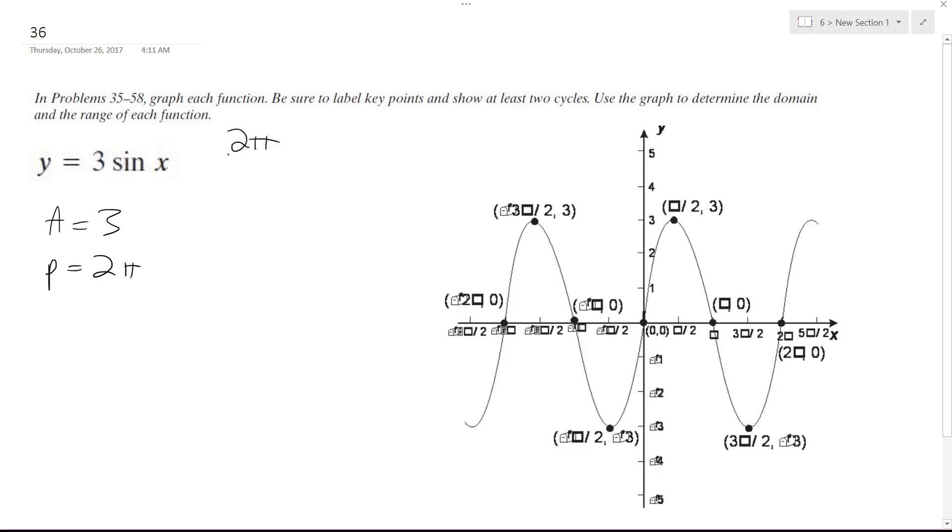For the period, the period is normally two pi divided by omega. So in this case, it would actually be two pi divided by the coefficient in front of x, which is just going to be one. So it would be two pi.